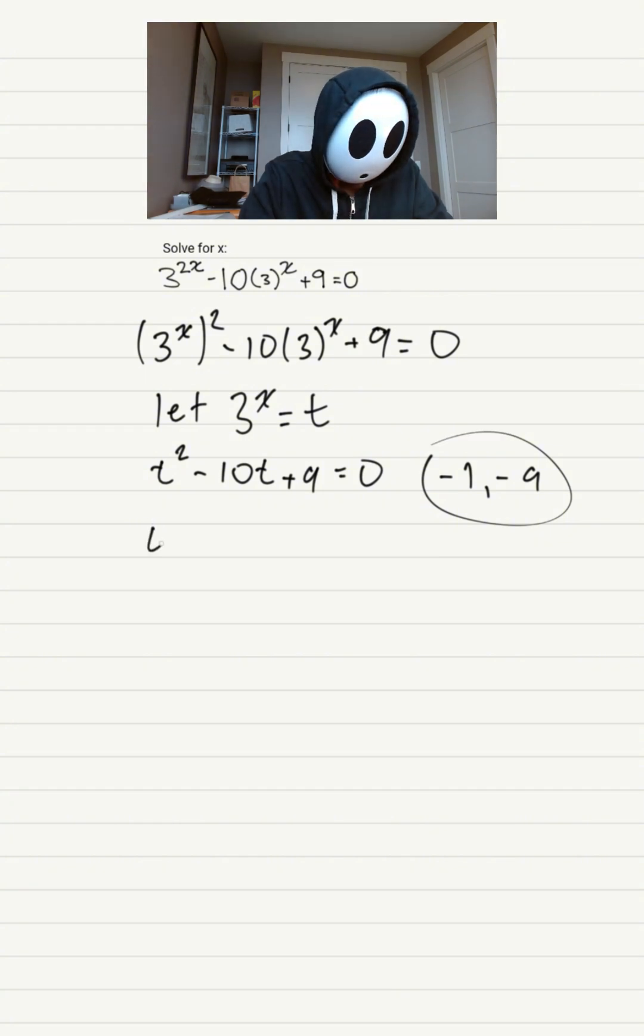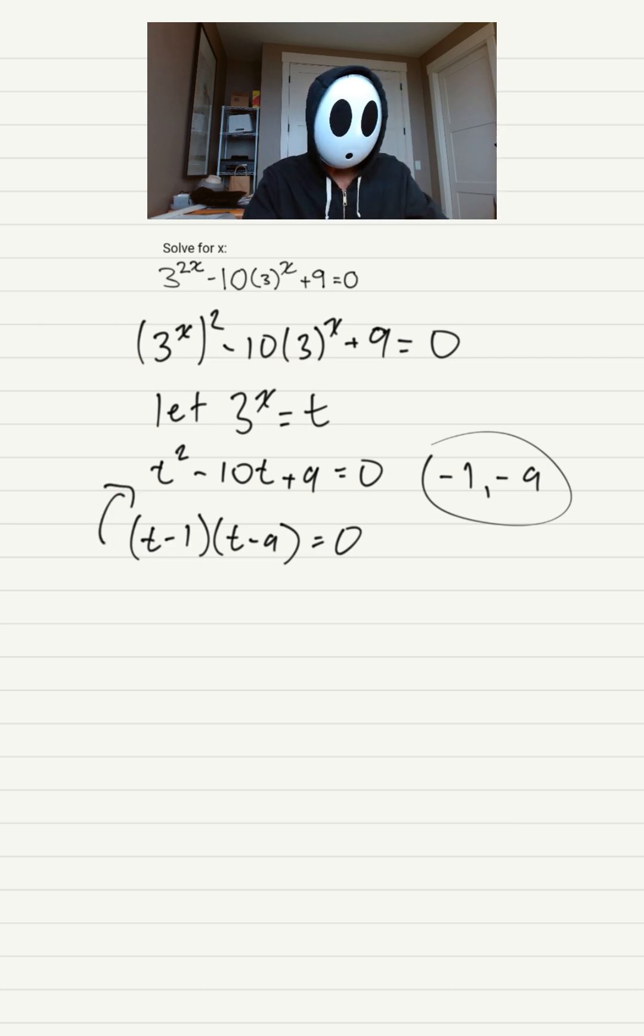So we're going to use it and do the rainbow method. So we have t minus 1 and t minus 9 equals 0. Feel free to foil that out, and we will get the equation above. So they are the exact same.